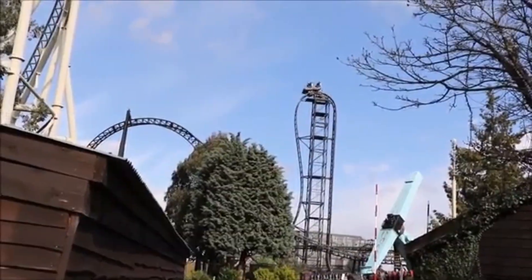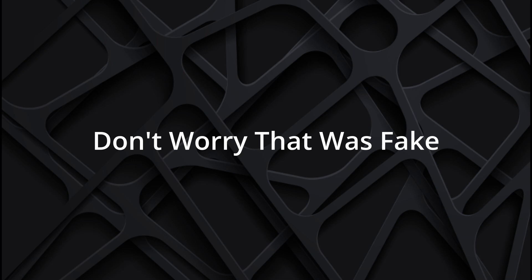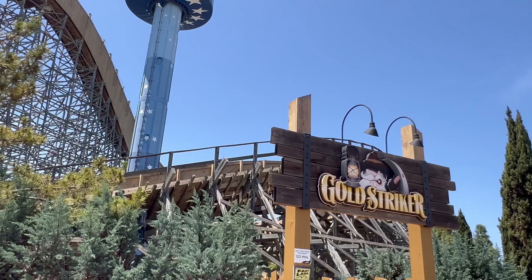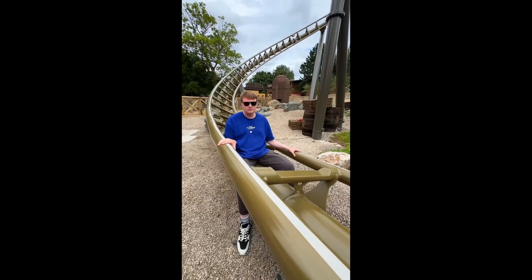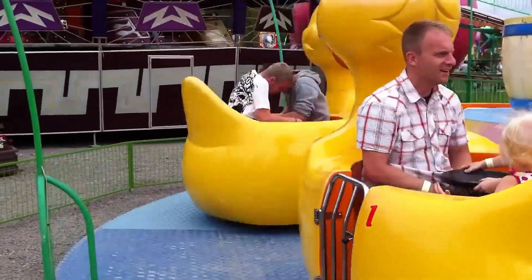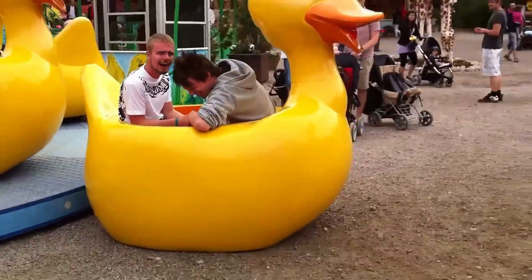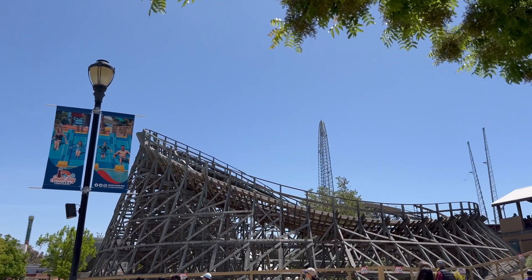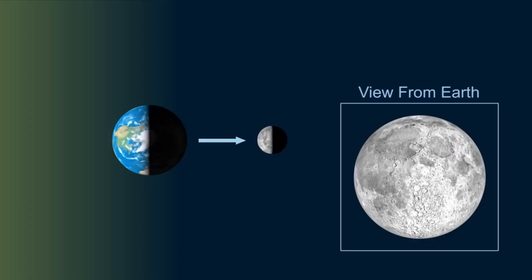One way you can die on a roller coaster is if it crashes. Can this happen on the Gold Striker? We can look at two main points: the drop and the turn right after the drop — specifically the velocity of the drop and the acceleration at the turn. Both of these have to be precise enough to not derail the coaster. If the roller coaster is going too fast at either the drop or the turn, there could be a big problem. The coaster has to travel at a certain acceleration to smoothly go through the turn.